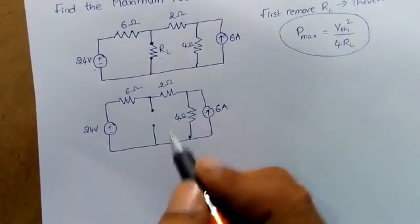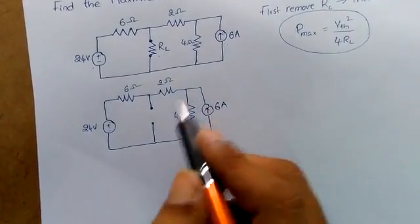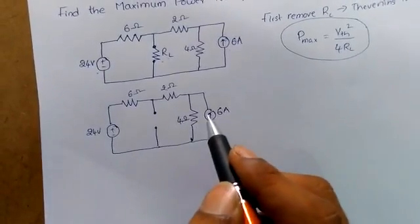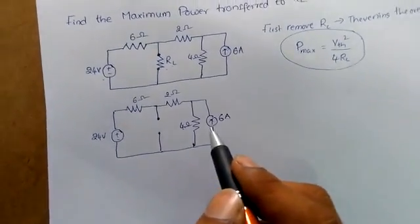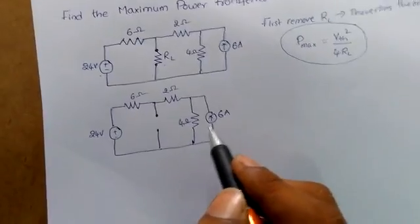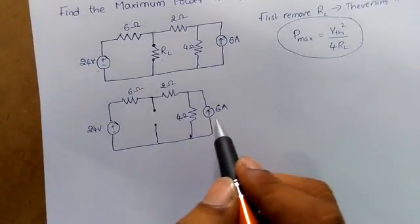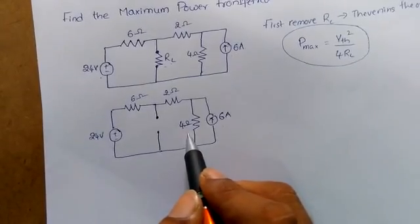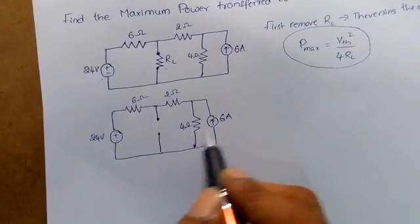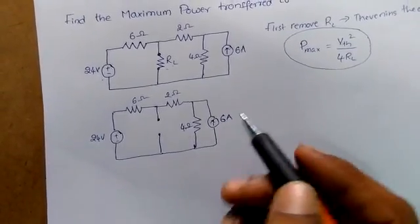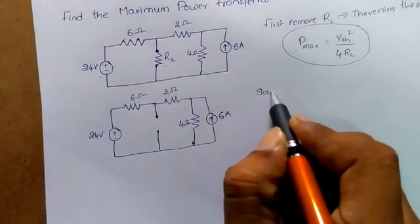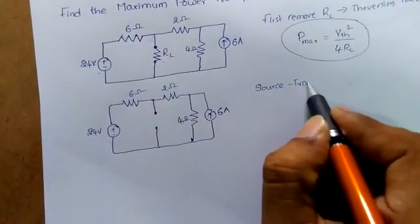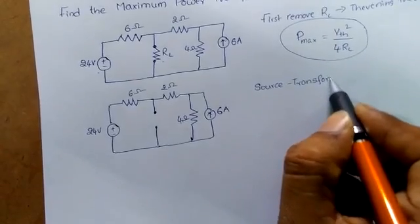The second step: is there any technique that reduces or simplifies the circuit? Here you can see a 6 amperes current source and also a 4 ohms resistance in parallel to the current source. Here, source transformation technique will be applied.